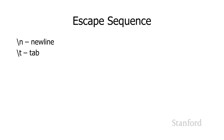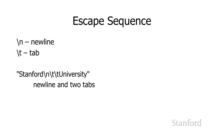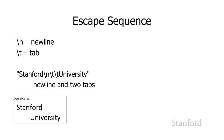There are a couple of these escape sequences. Probably the most common you'll run into are \n and \t. \n represents a new line or carriage return, and \t represents a tab. For example, the string 'Stanford\n\t\tUniversity' represents 'Stanford' followed by a new line followed by two tabs, so you'd see 'Stanford' on one line and 'University' on the next line, tabbed over a bit.